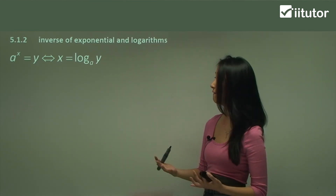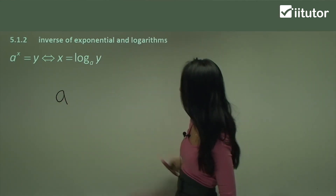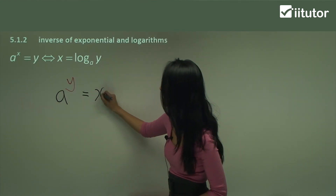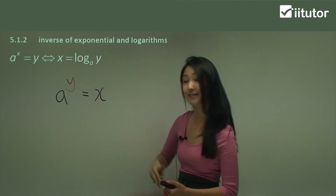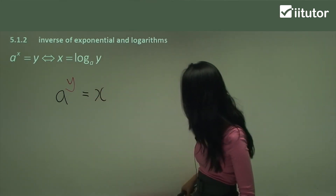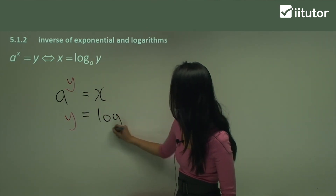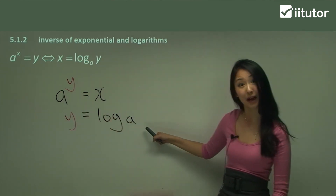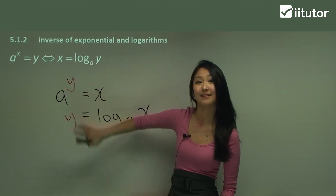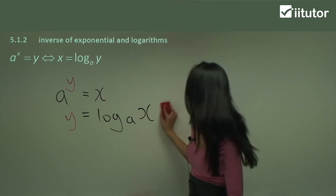So how we use this in functions: the x becomes a y, so we have a to the power of y equals x. And remember how we always want to make y the subject — that's why we need to use this log rule. We get y equals log base a of x, because a is the base of the index, so it becomes the base of the log. That's how we've made y the subject. So remember, for the inverse of exponential and logarithm functions, we're going to have to use a log rule.